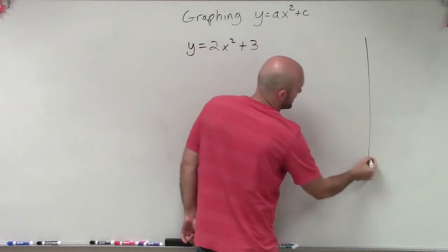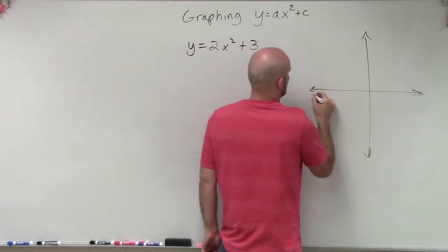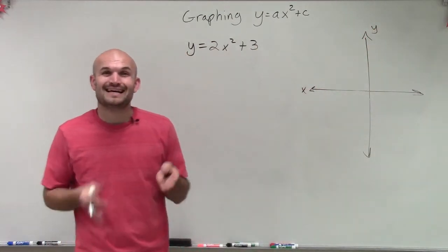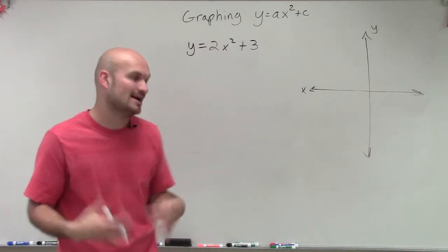So when graphing a quadratic, we have our y-axis and then our x-axis. And remember, a parabola, which is the shape of the graph that a quadratic makes, is a set of points that's created by an x-coordinate and a y-coordinate.